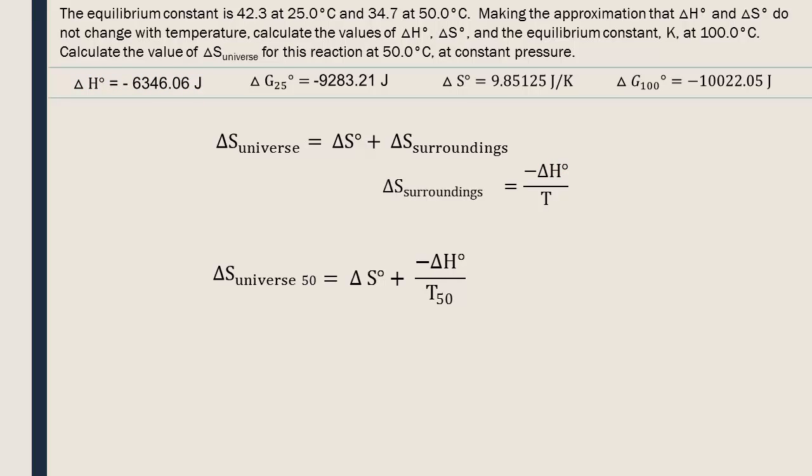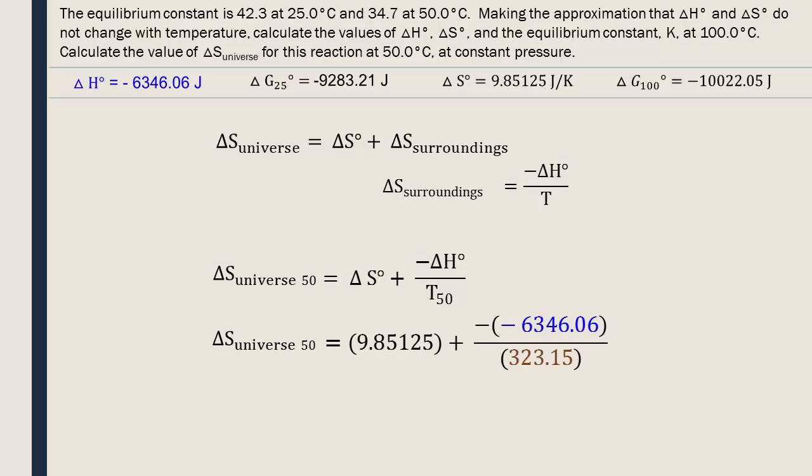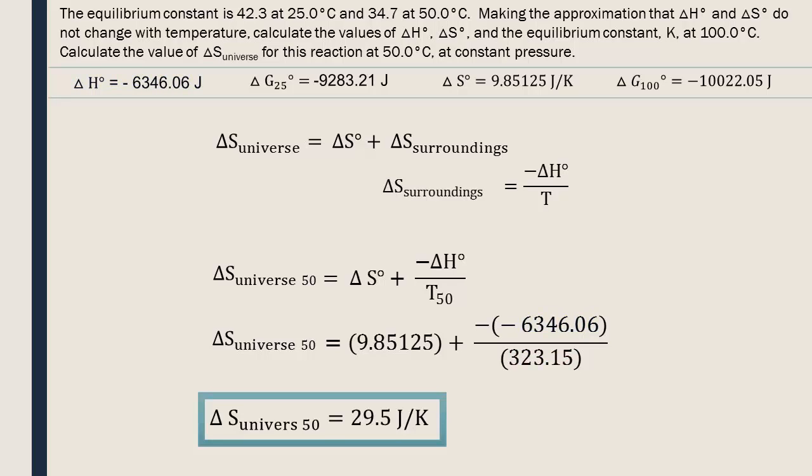We insert this new equation into the equation for delta S universe, and put in the values of delta S and delta H that we already calculated. The entropy variation of the universe is 29.5 joules per kelvin. Remember that spontaneous reactions, or reactions at equilibrium, will always have a positive delta S universe or equal to zero. So you can let your parents know that it's not your fault that your room only gets messier and messier — the disorder of the universe never goes down. It's the second law of thermodynamics.